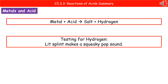The second reaction we need to know is the reaction of metals with acid. The general word equation is: metal plus acid makes salt and hydrogen. The naming of the salt follows exactly the same process as with carbonates. They could also ask how to prove the gas is hydrogen — the gas test for hydrogen is that a lit splint makes a squeaky pop sound. Make sure you say 'lit splint'; a glowing splint doesn't work.